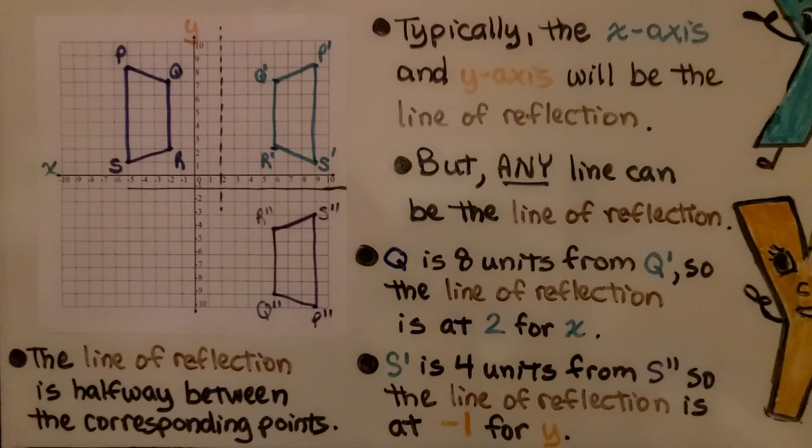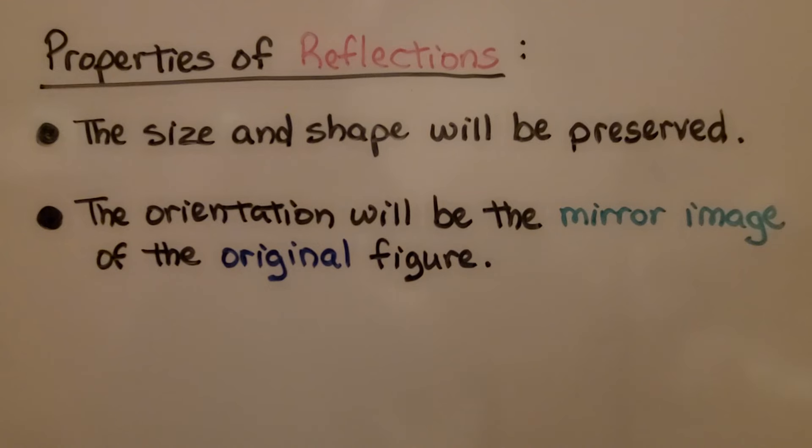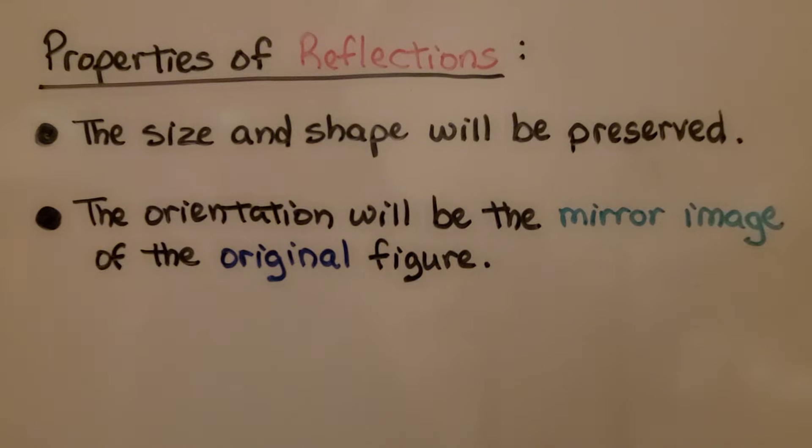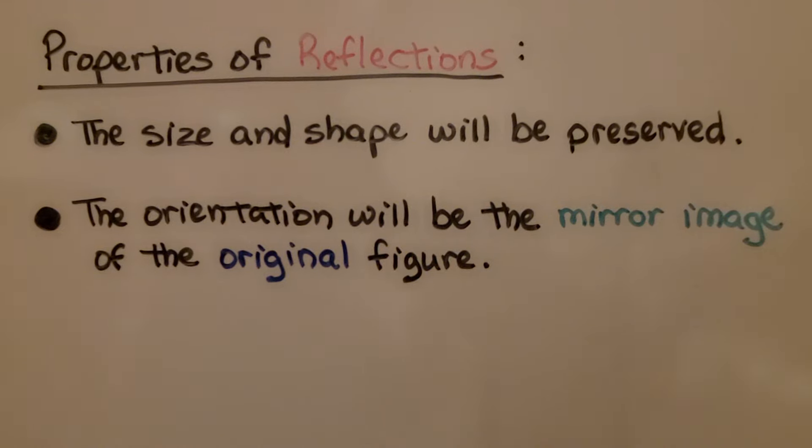The line of reflection is halfway between the corresponding points. The properties of reflections: the size and shape will be preserved when it reflects, but the orientation will be the mirror image of the original figure.